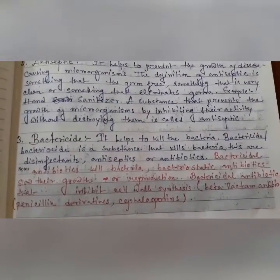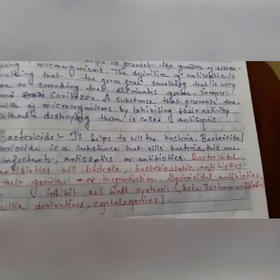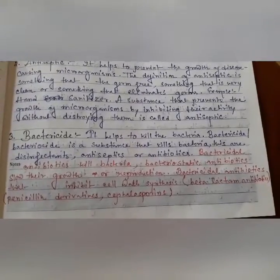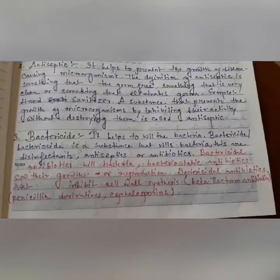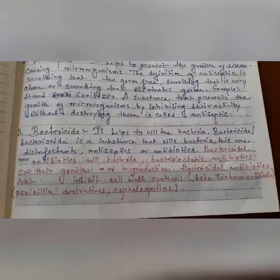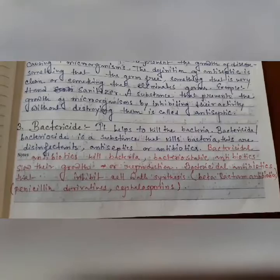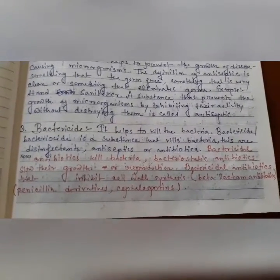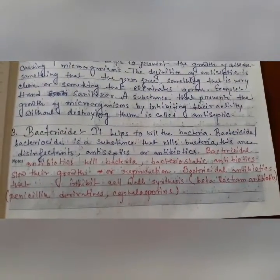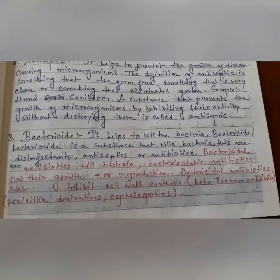Next, bactericide — it helps to kill bacteria. Bactericide and bacteriocide both have the same meaning: a substance that kills bacteria. These are disinfectants, antiseptics or antibiotics. The main important point is that bactericidal antibiotics kill bacteria, and bacteriostatic antibiotics slow their growth or reproduction. Bactericidal antibiotics inhibit cell wall synthesis — for example, beta-lactam antibiotics such as penicillin derivatives and cephalosporins.